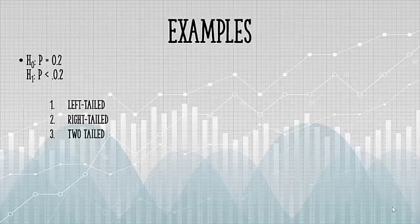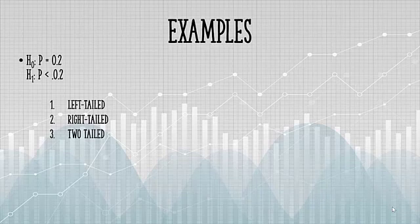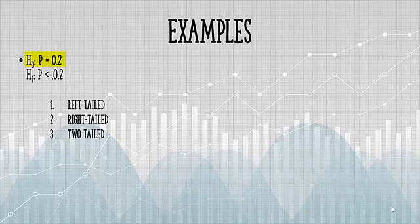Let's take a look at a few examples. Sometimes you'll be given a question and asked if it's left, right, or two-tailed. The only information you're given is the null hypothesis, that's H sub 0, and the alternate hypothesis, H sub 1. You might also see that written as H sub A.